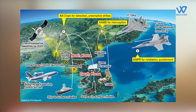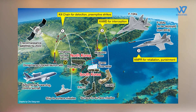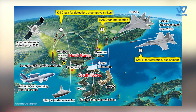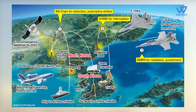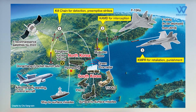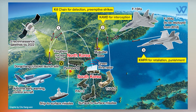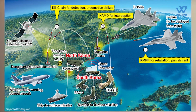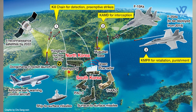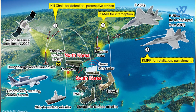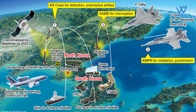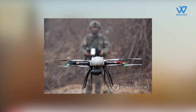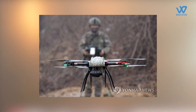The Kill Chain is a part of South Korea's three-axis system, which includes the deployment of the Korea Massive Punishment and Retaliation (KMPR) campaign to neutralize the enemy's leadership and military infrastructure, as well as the use of the Korea Air and Missile Defense (KAMD) system to thwart approaching missile strikes.